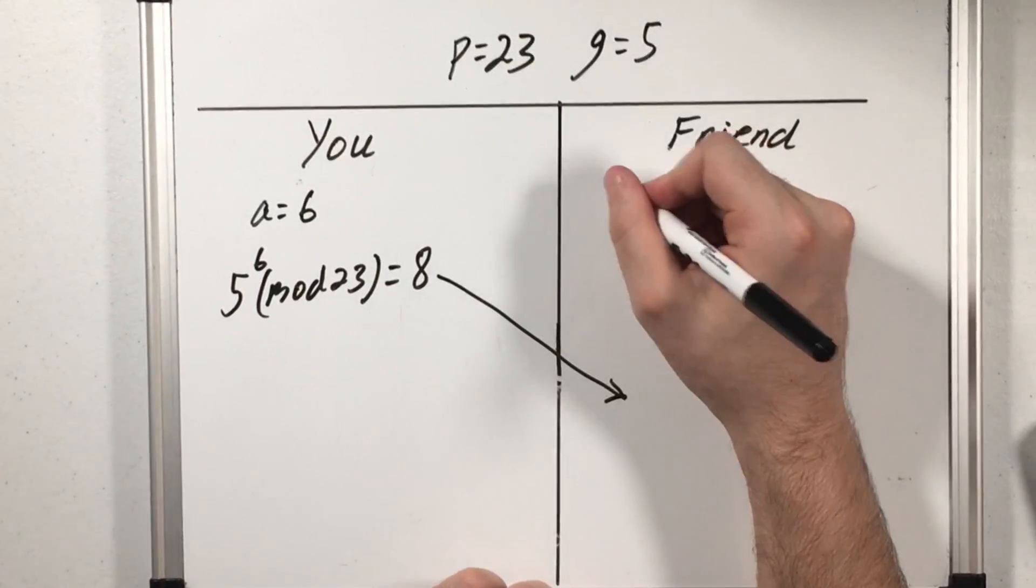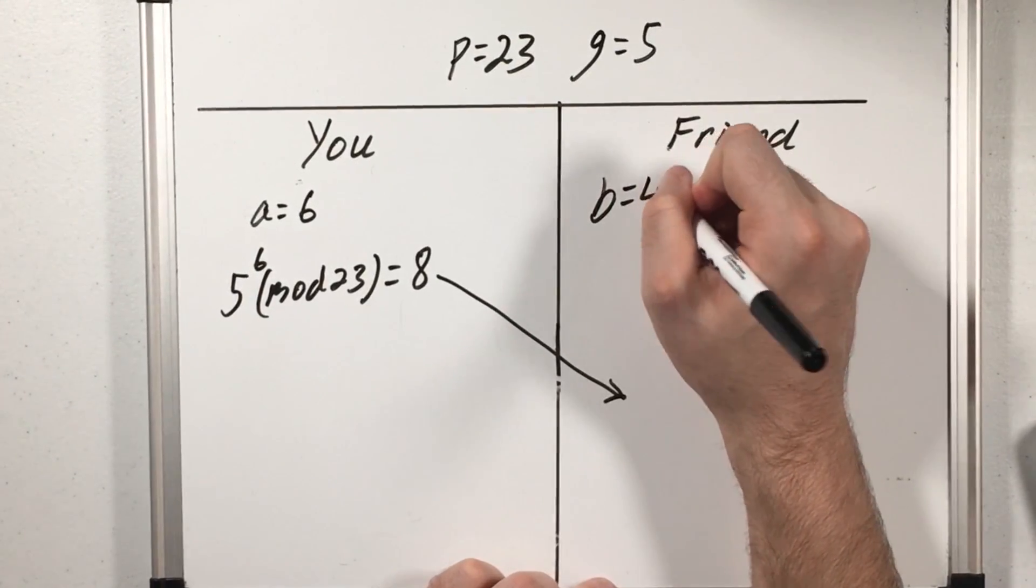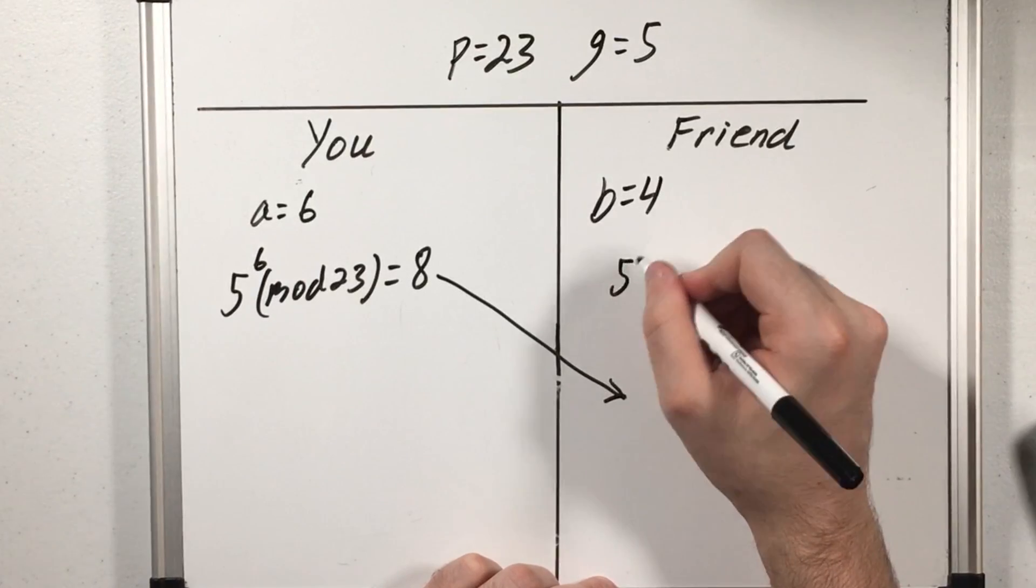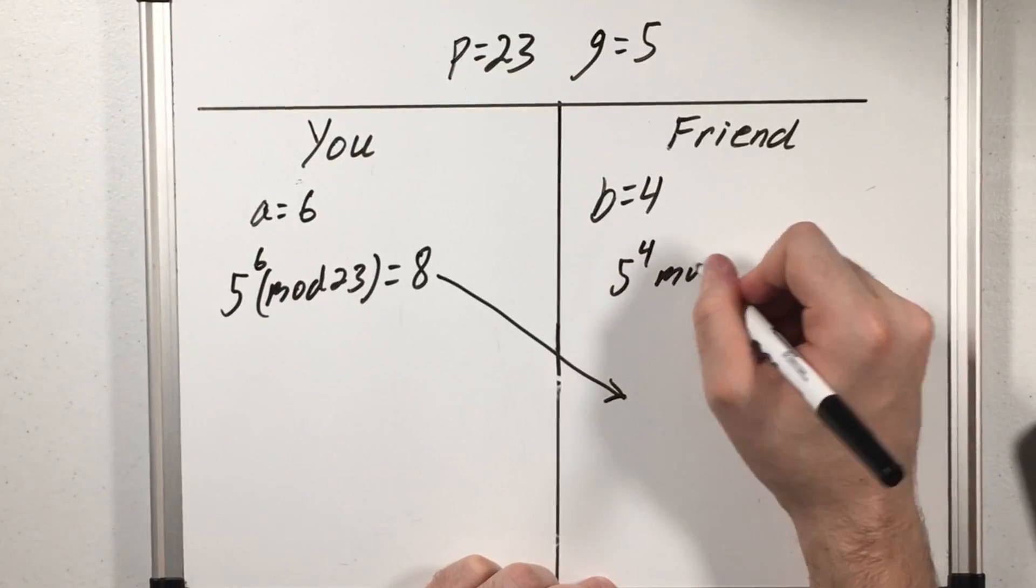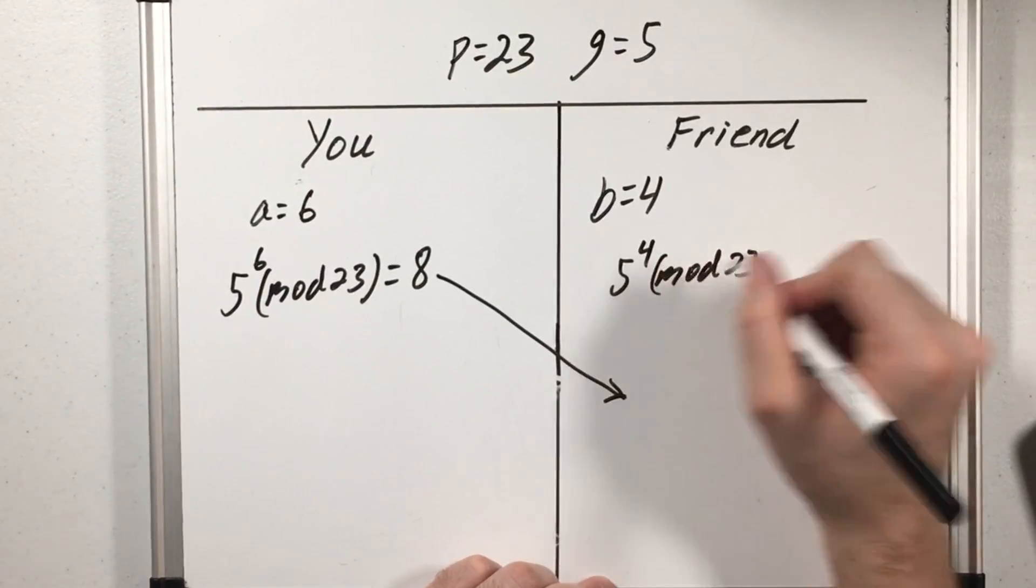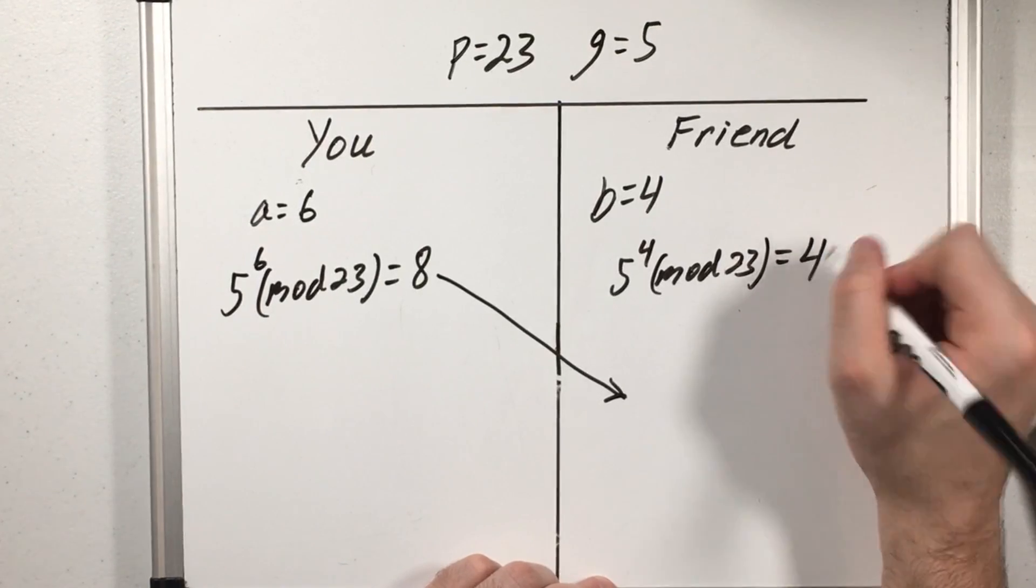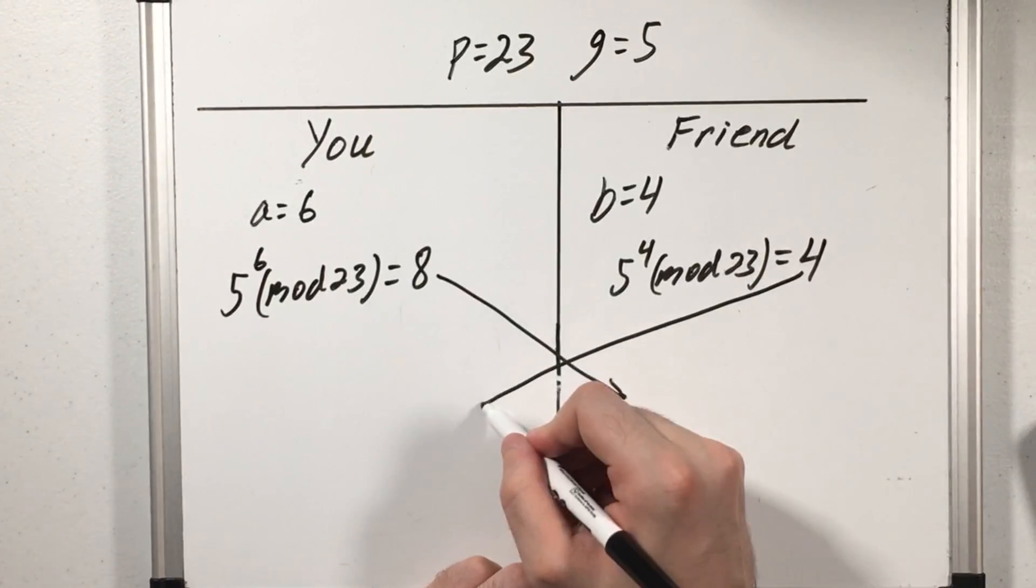Then my friend does the same thing. They think of a secret number let's say 4 and they do G raised to the fourth power mod 23 and they find this is congruent to 4 and they send that value to me.